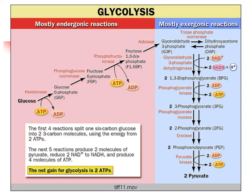Glucose-6-phosphate is subsequently converted to fructose-6-phosphate. Glucose-6-phosphate is an aldose sugar and fructose-6-phosphate is a keto sugar, so an aldose sugar is converted to a keto sugar. This isomerization reaction is catalyzed by phosphoglucose isomerase. Subsequently, another phosphate group is added to fructose-6-phosphate by phosphofructokinase, at the expense of one ATP molecule, converting fructose-6-phosphate to fructose-1,6-bisphosphate.